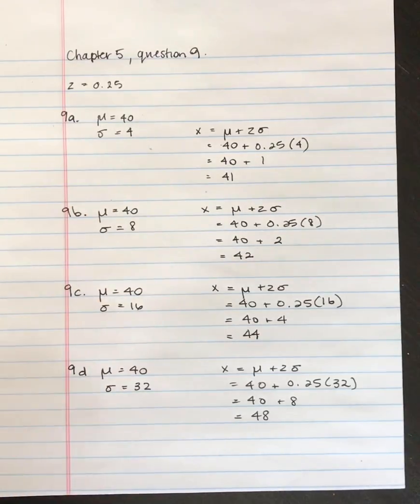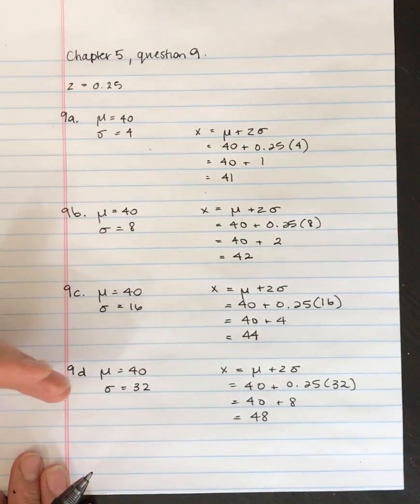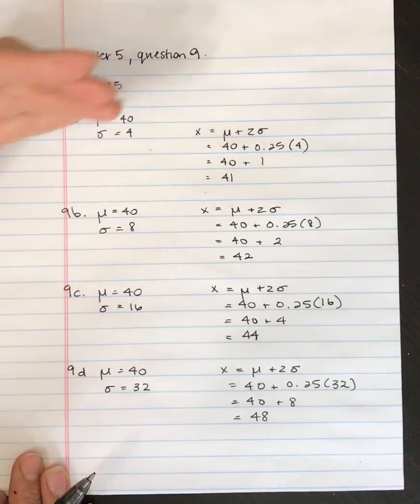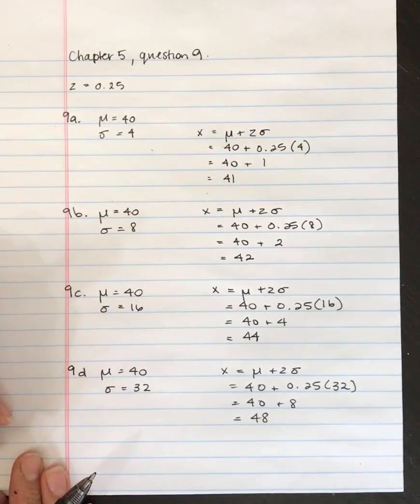So if you look through each of these, the mean stays the same. What's happening is that at each interval or each question, the standard deviation is being increased.